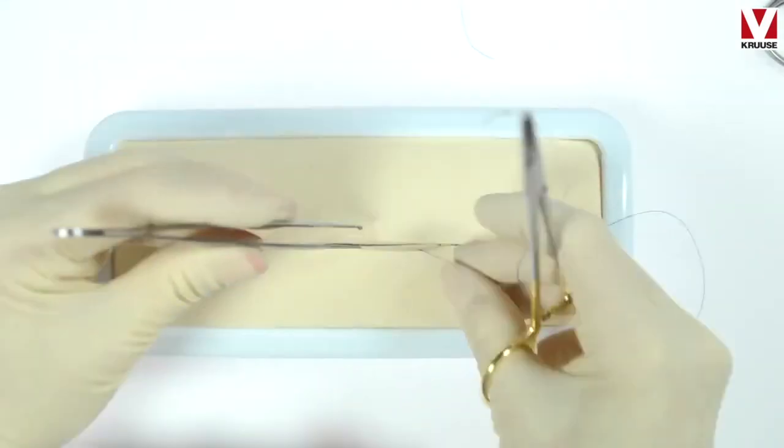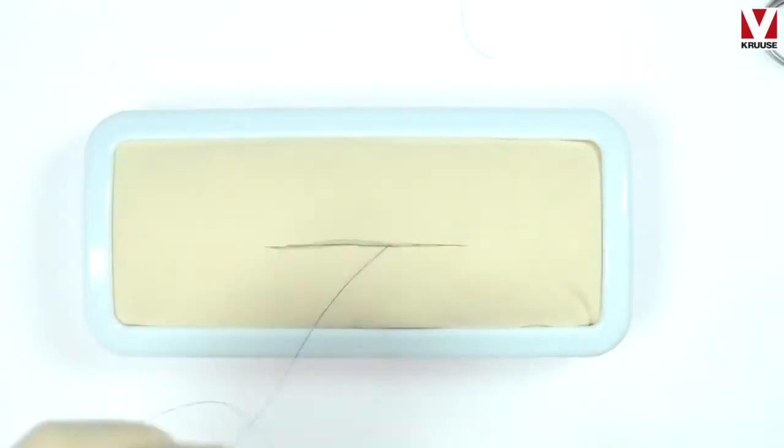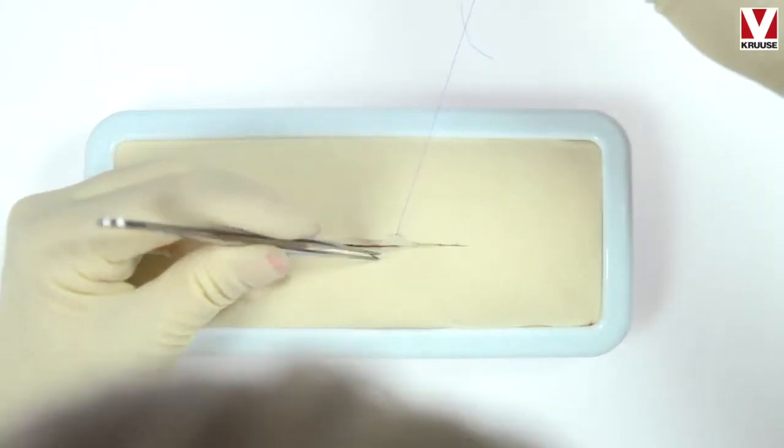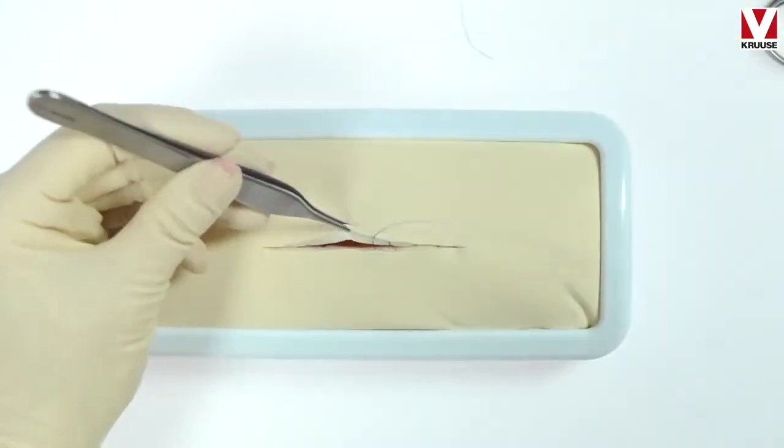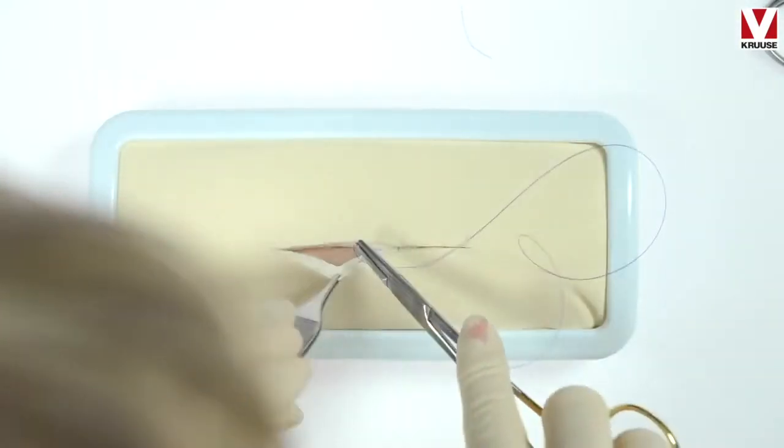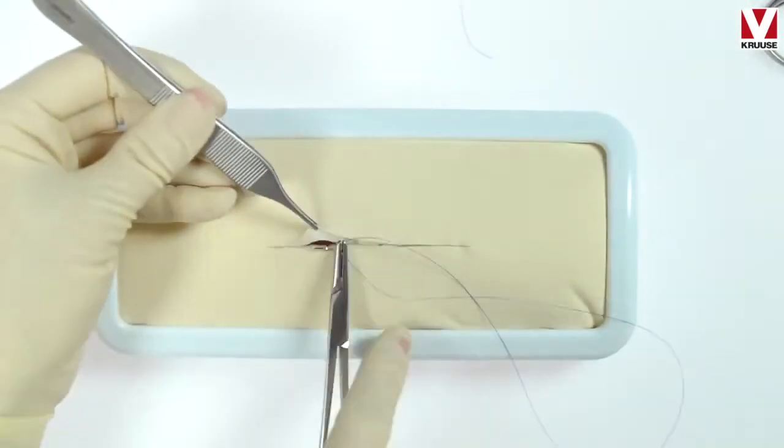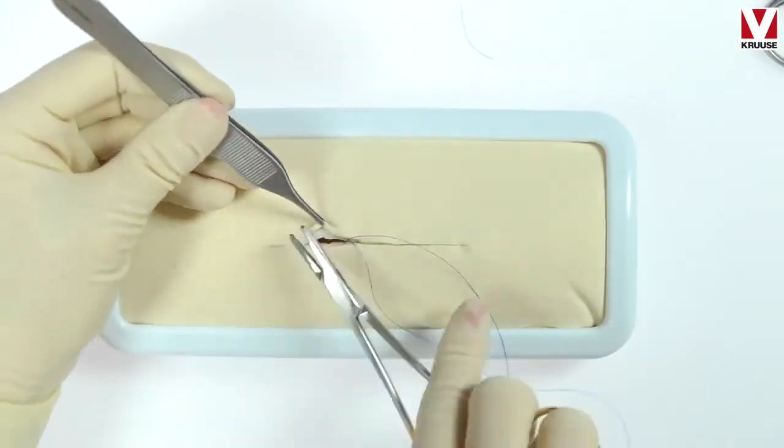So here we go with the continuous pattern. We start on one side and then to the next side. And it is very important that you just cross the incision and you don't go back. So the bite you take on the opposite side has to be perpendicular to the suture that came out on the other side.